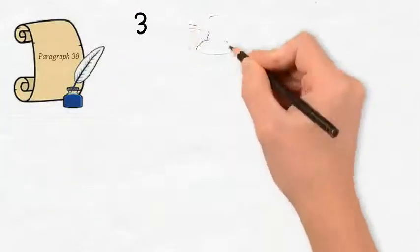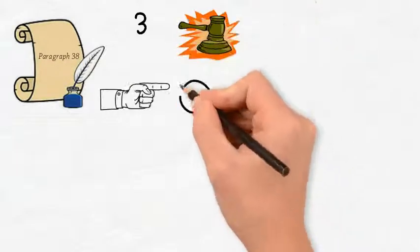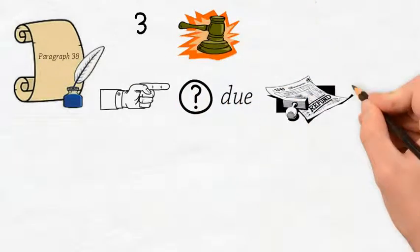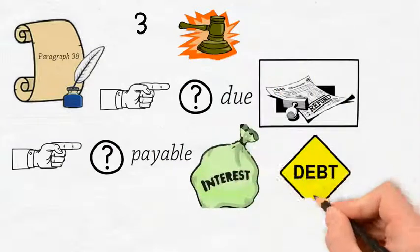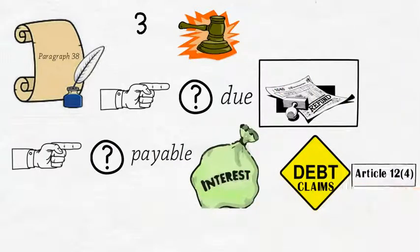Third, therefore, the law as we see is well settled to the effect that what was due as a refund and what was payable as interest on such refund are debt claims within the meaning of Article 12.4.